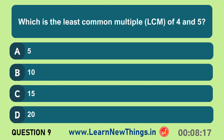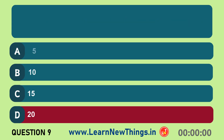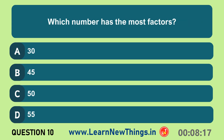Which is the least common multiple of four and five? Twenty. Which number has the most factors? Thirty.